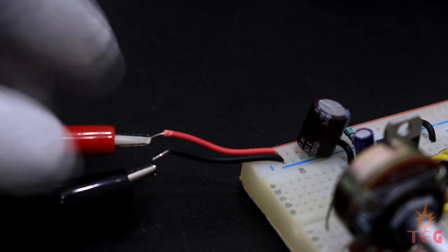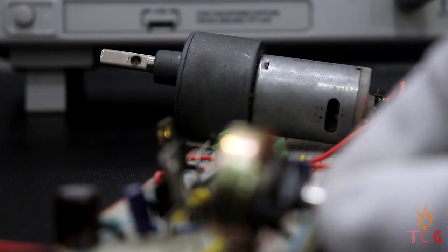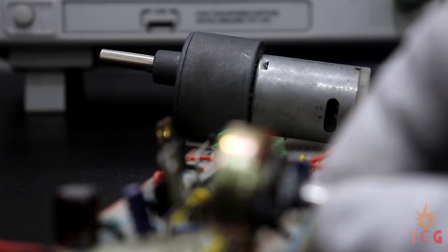After connecting the required voltage input and motor to the output terminal, the speed of the motor can be easily increased or decreased using the potentiometer.